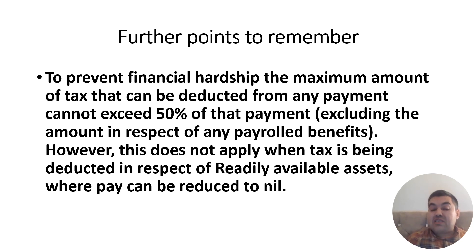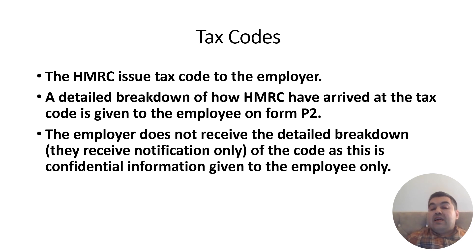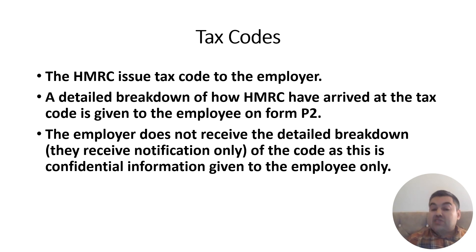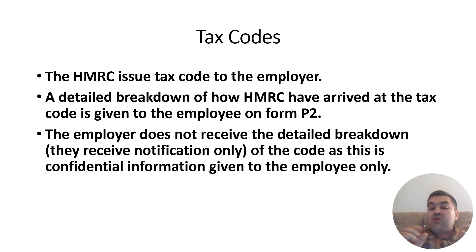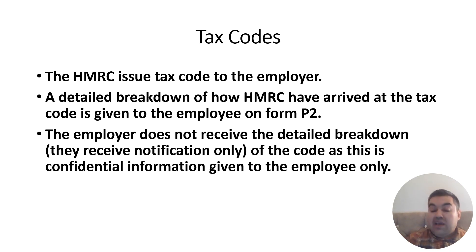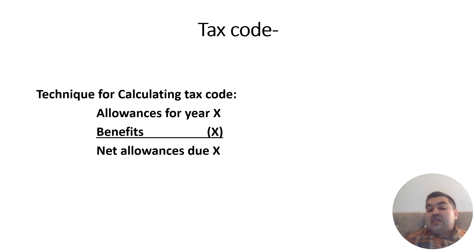HMRC issues tax codes to the employer. A detailed breakdown of how HMRC arrived at the tax code is given to the employee on form P2. The employer also receives a notification; however, HMRC does not provide the breakdown to the employer because this information is confidential. Sometimes the employee has other income, so HMRC adjusts the tax code accordingly and sends only a notification through their online portal — or a letter — telling the employer to use the new code from the following month.